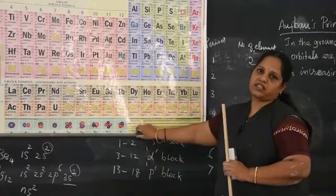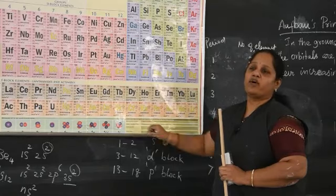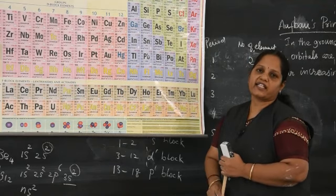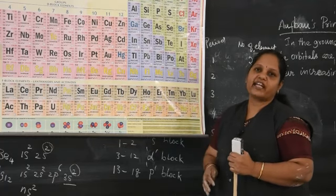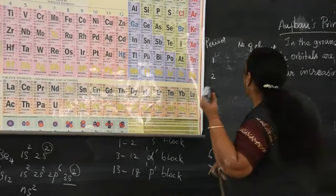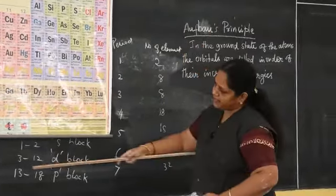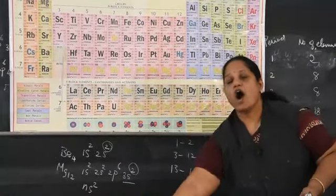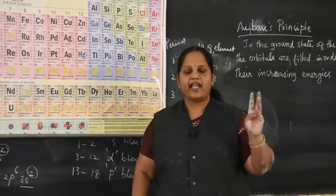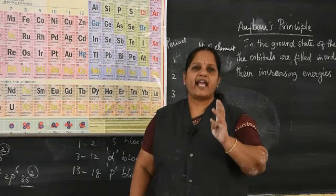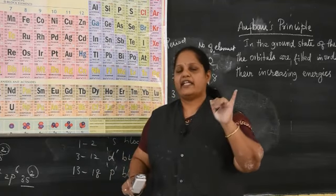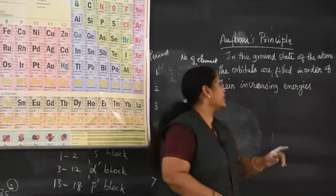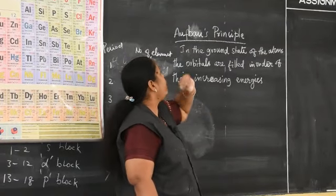Next: how do you fill electrons in the orbitals of different atoms? Filling of electrons in an orbital is called electronic configuration. This is done using the Aufbau principle: in the ground state of an atom, orbitals are filled in the order of their increasing energies.